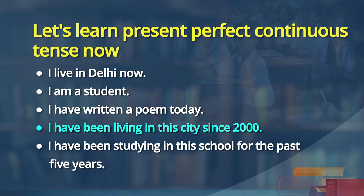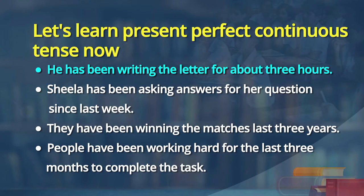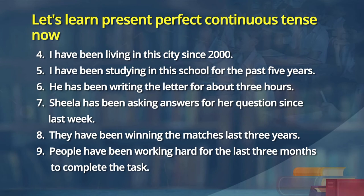Now look at sentences 4 through 9. 'I have been living in this city since 2000' — when did I start living? The year 2000 onwards. Am I still continuing to live? Yes. That is what Present Perfect Continuous is — an action which started long ago and continues still.